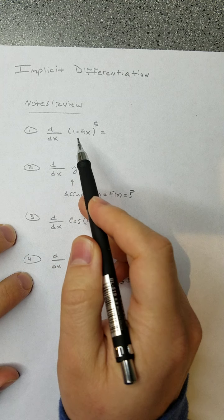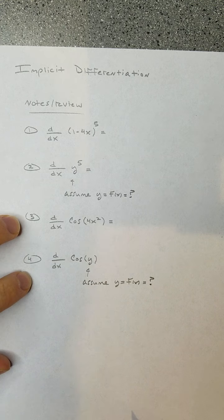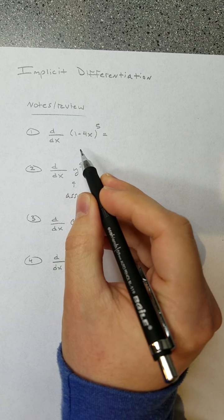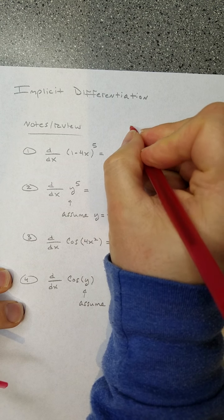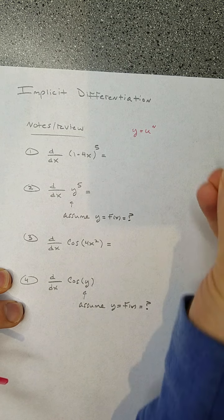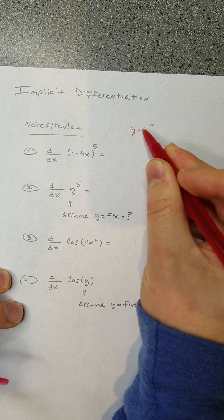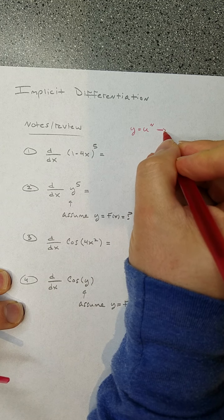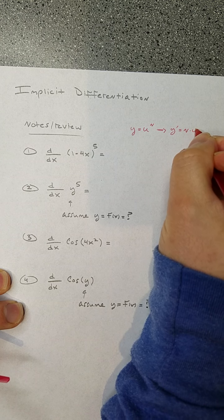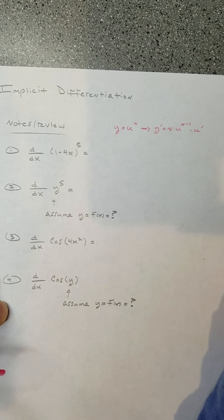Say we wanted to find the derivative of (1 minus 4x) all to the fifth power. There's a rule for this called the chain rule. As a quick reminder: if y equals u to the n power, where u is some function or formula that involves x — kind of like 1 minus 4x — then the chain rule says the derivative is n times u to the n minus 1 power times u prime.